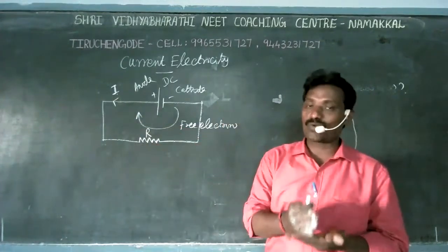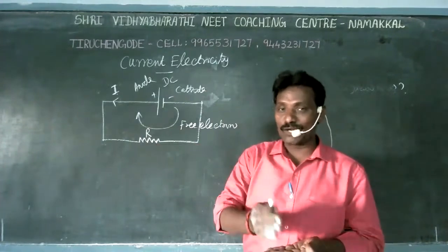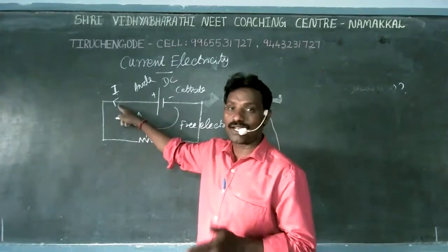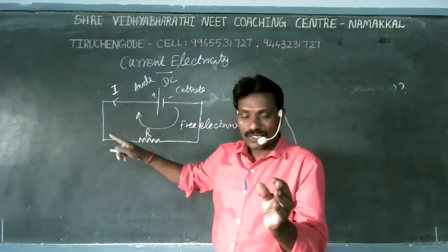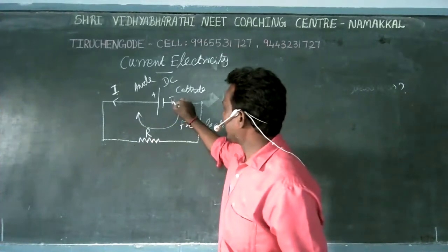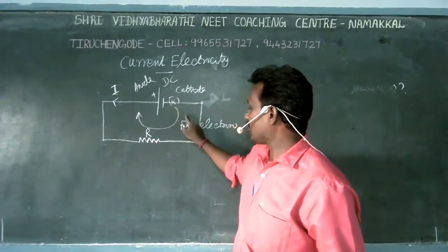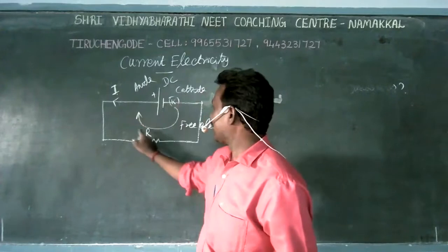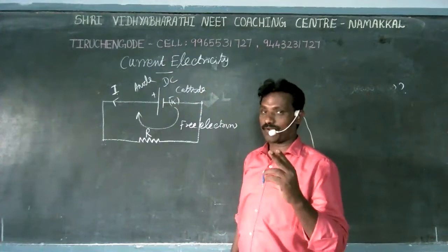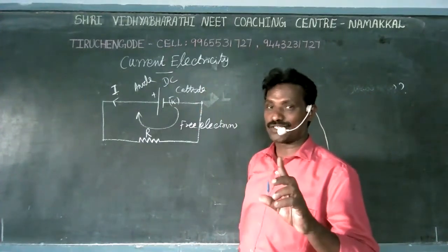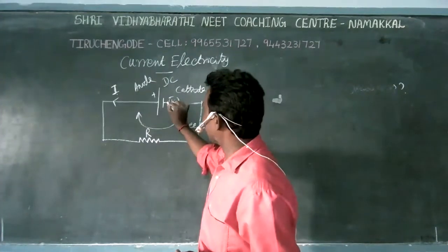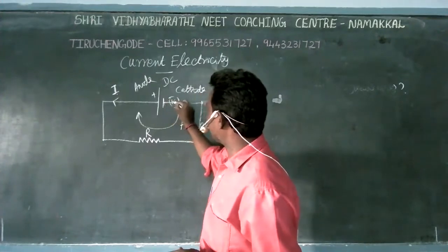Current is a scalar quantity, not a vector quantity. Vector quantity means both magnitude and direction. Current does not have direction in that sense. When the switch is on, electrons are always moving from the cathode (negative plate) to the anode (positive plate). There are only two types of current in the world — AC current and DC current. There is no third current.